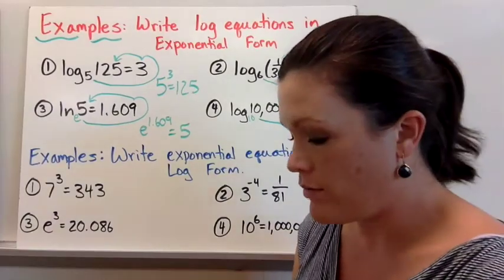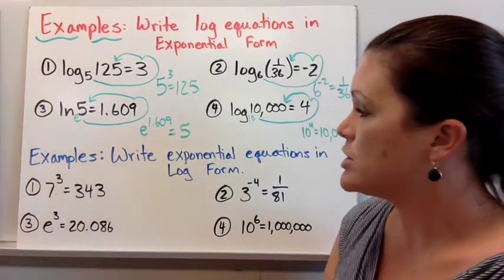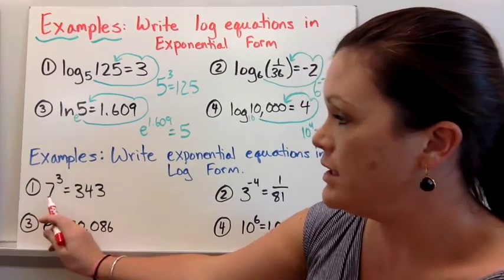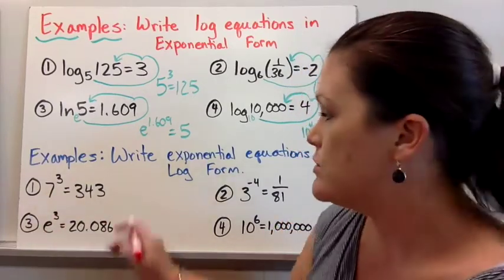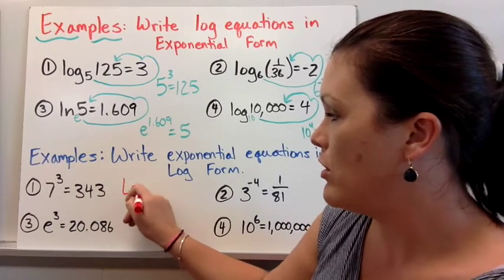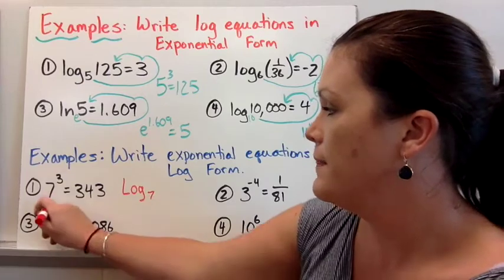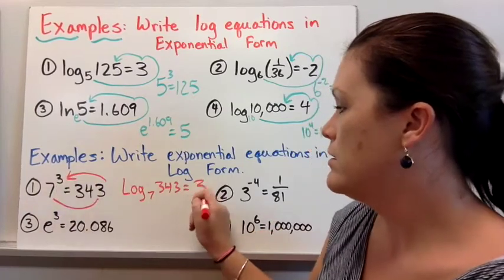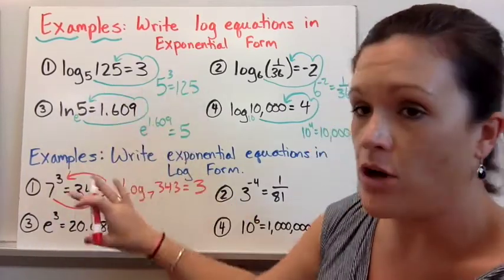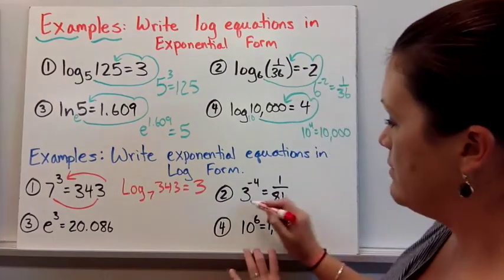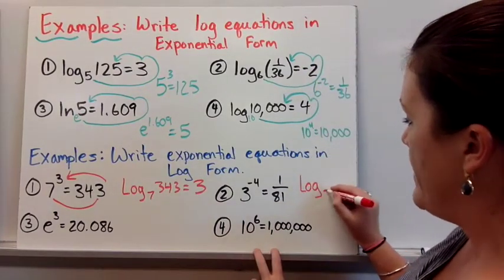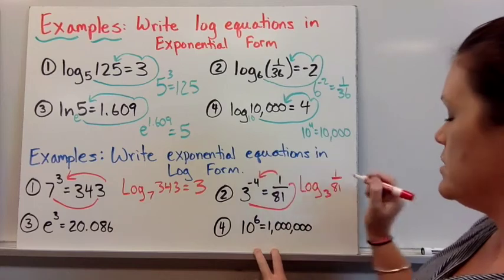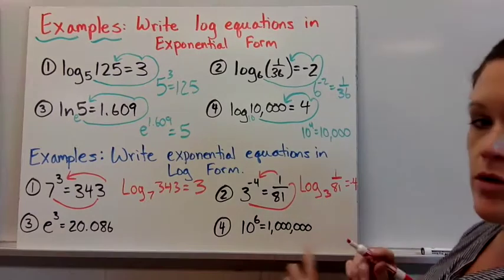For the bottom part we're going to look at the reverse. If we have an exponential equation, how do you write it in log form? For number 1, notice 7 is our base with an exponent of 3. So log base 7 of 343 equals 3. That same pattern that helped us up here can also help us down here. Number 2, we take the base: log base 3 of 1 over 81 equals the exponent, which equals negative 4.